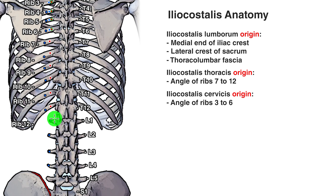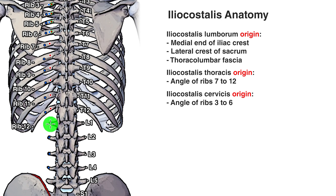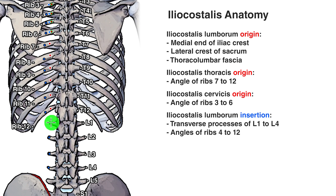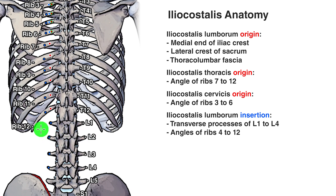Let's take a look at the insertions for the iliocostalis lumborum. It inserts onto the transverse processes of L1, L2, L3 and L4. The transverse processes are these bony projections which come off either side of the vertebrae. In addition, it also connects onto the angles of the ribs — from rib four all the way through to the 12th rib.